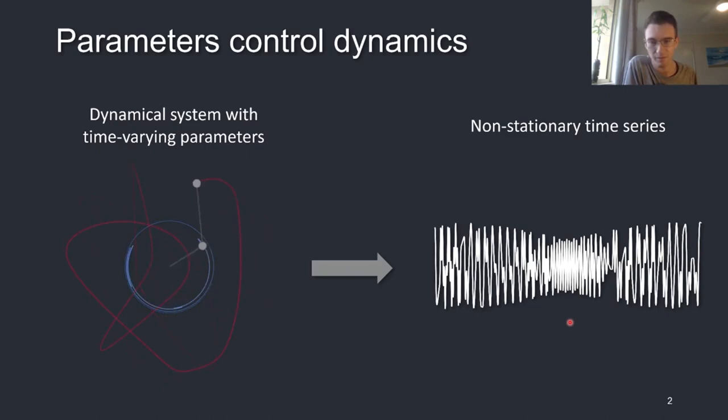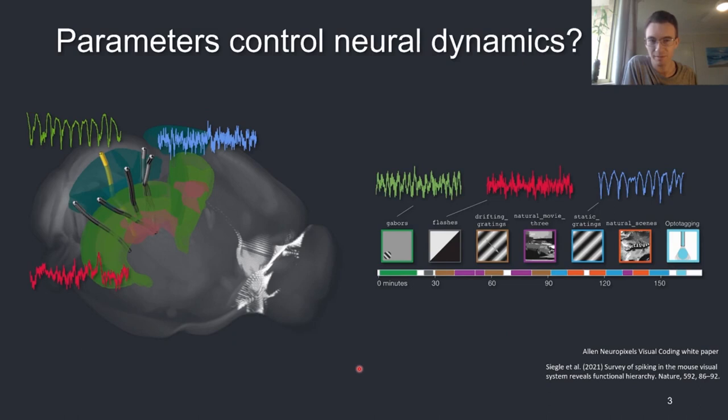Non-stationarity is commonplace in neural data. An EEG signal will show distinct dynamics between different sleep stages, where a task condition might change during an fMRI recording. However, the generative model of the brain, with its intricate, complex interactions between billions of neurons, is nowhere near as clear or as simple as for the double pendulum. Our goal is to automatically find changes in dynamics and infer meaningful parametric variation, even when we lack an accurate or complete generative model.